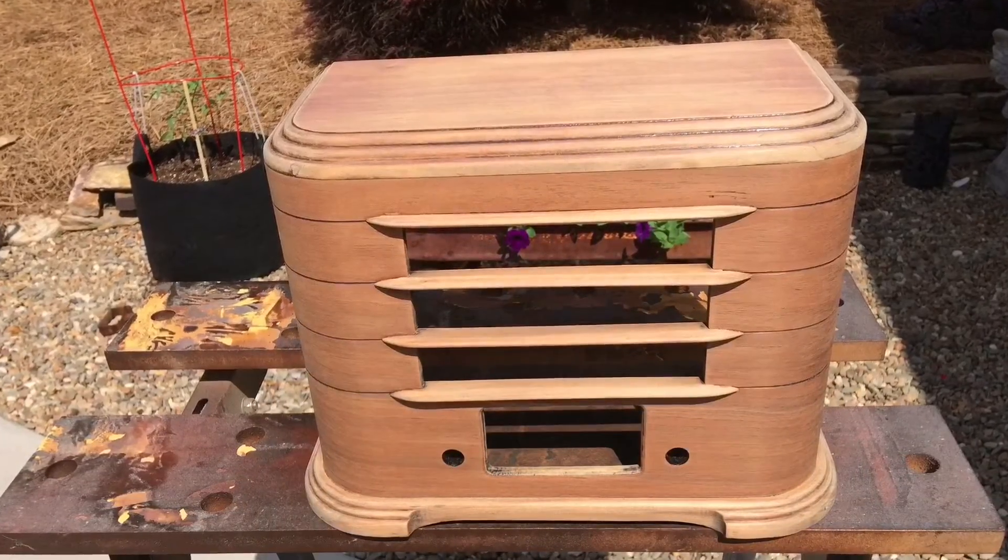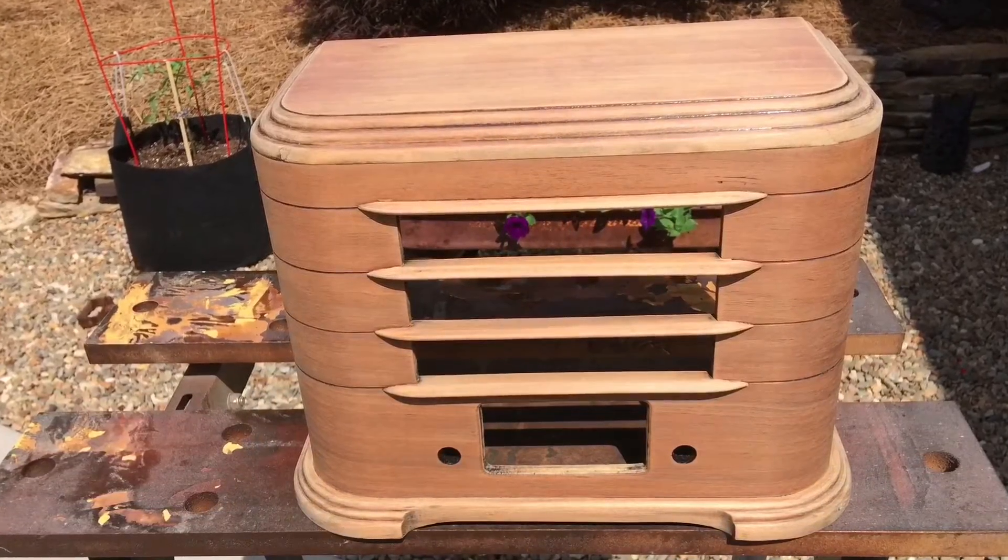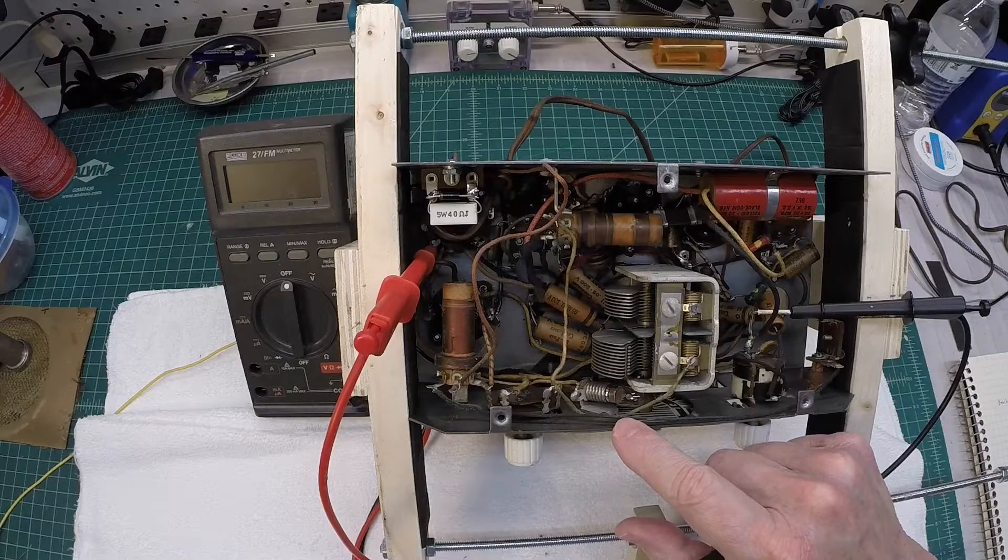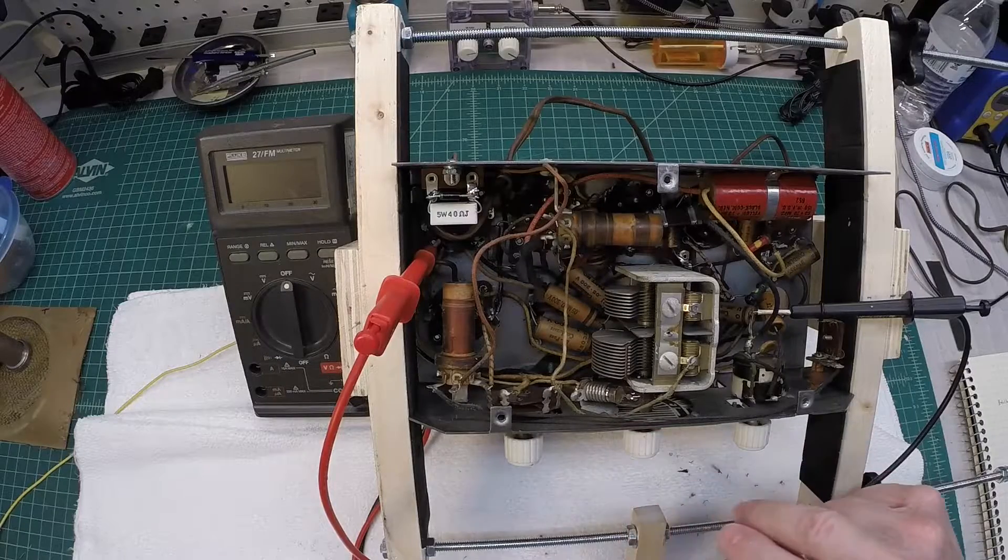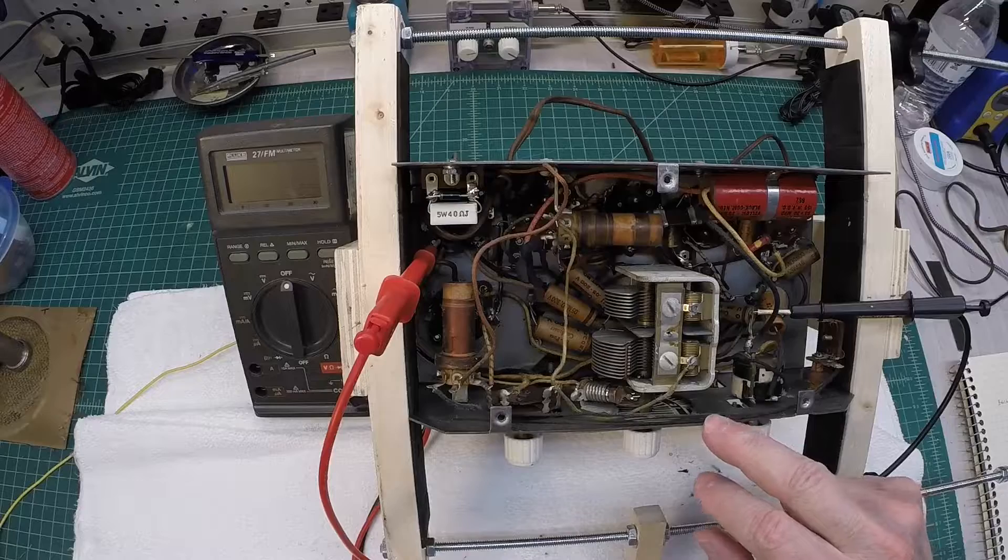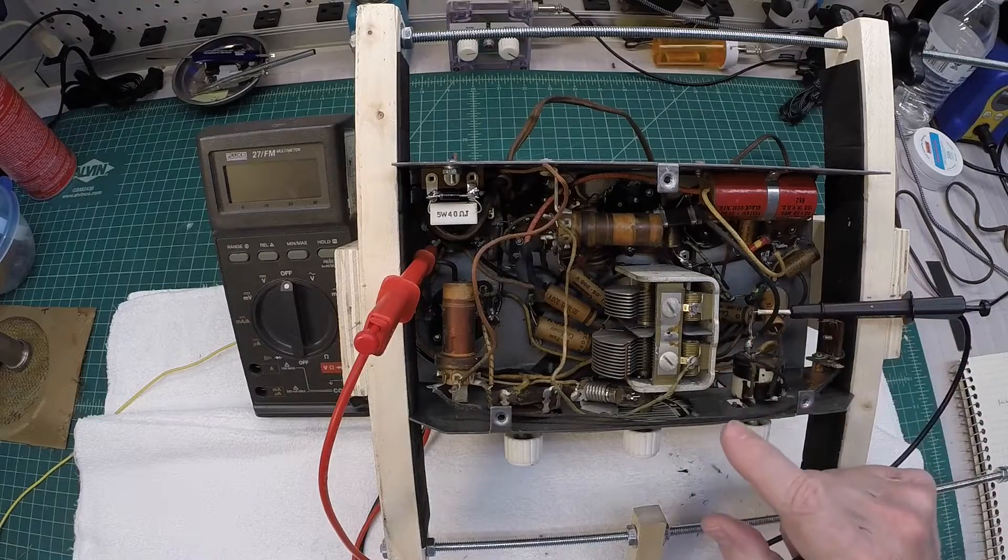I want to turn my attention here to the heater string. This particular set uses a ballast tube to reduce the voltage, the line voltage by right around 49 volts or so, 300 milliamps across the heaters of the tubes.